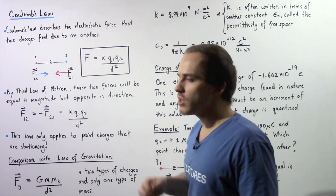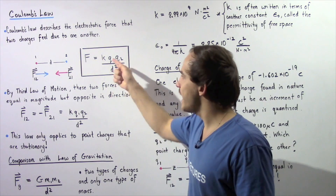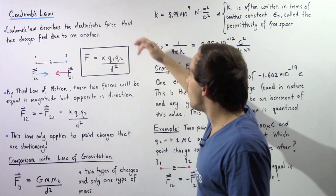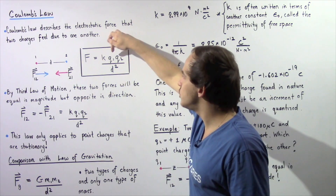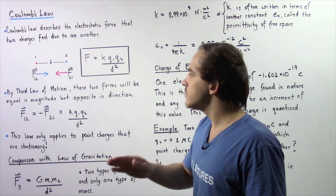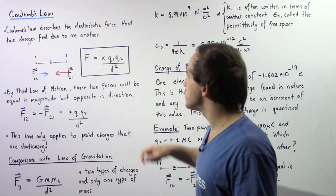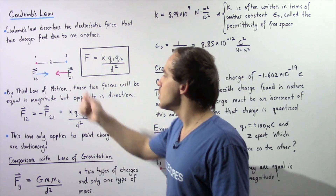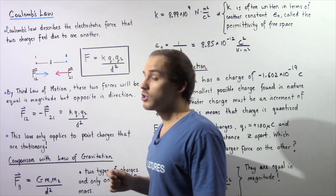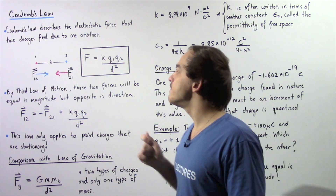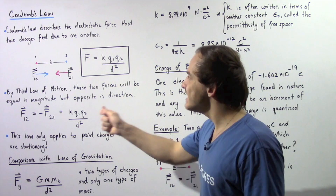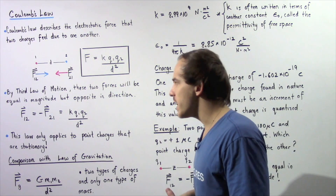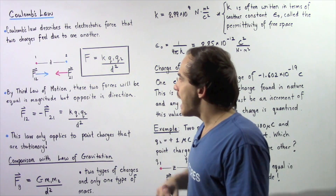Force is equal to the product of k — a constant — multiplied by q1, the charge of point charge 1, multiplied by q2, the charge of point charge 2, divided by the distance between them squared.